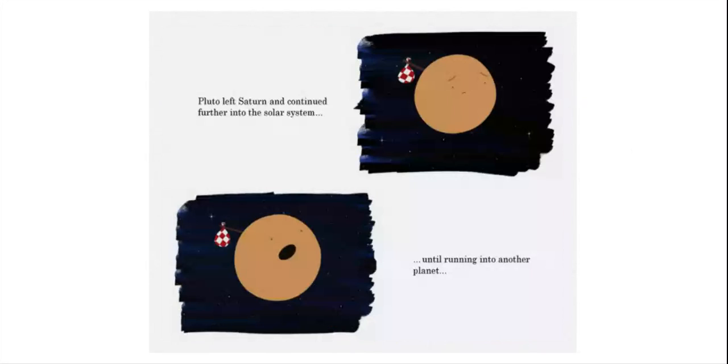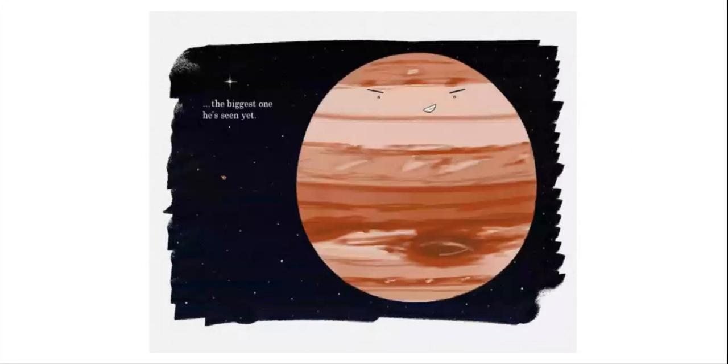The mirror slipped out of Pluto's hands, plunging itself into Saturn's atmosphere. I think we're done here, said Saturn, as her favorite mirror sank further and further into the depths of her cloudy surface. Pluto left Saturn and continued further into the solar system, until running into another planet. The biggest one he's seen yet.